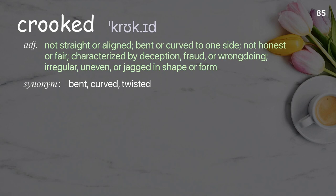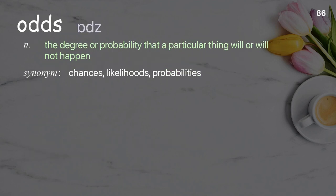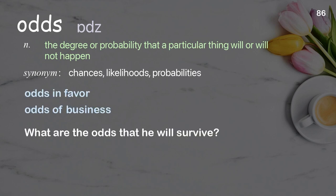Crooked: not straight or aligned; bent or curved to one side; not honest or fair; characterized by deception, fraud, or wrongdoing; irregular, uneven, or jagged in shape or form. Examples: odds in favor; odds of business. What are the odds that he will survive?